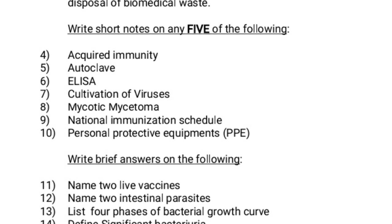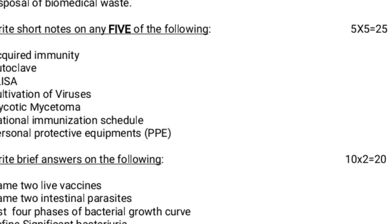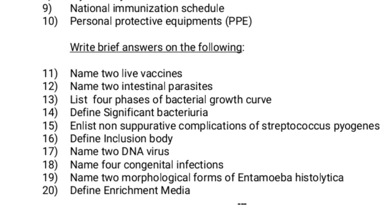Next, write brief answers on the following. These brief answers carry 2 marks each, and there is no choice — you have to answer all 10, totalling 20 marks. Eleventh question: Name any 2 live vaccines. Twelfth question: Name 2 intestinal parasites. Thirteenth question: List 4 phases of the bacterial growth curve. Fourteenth question: Define significant bacteriuria.